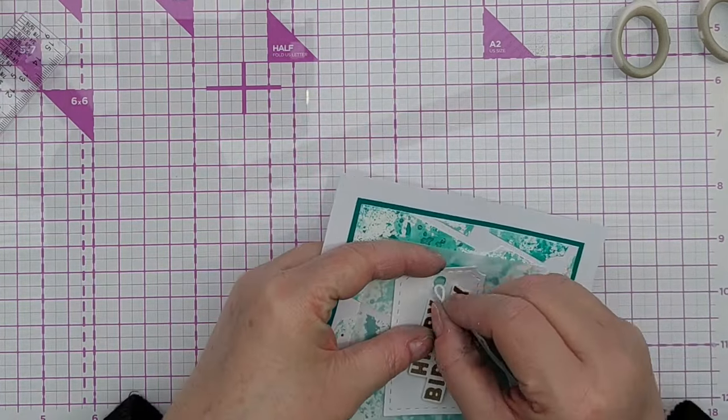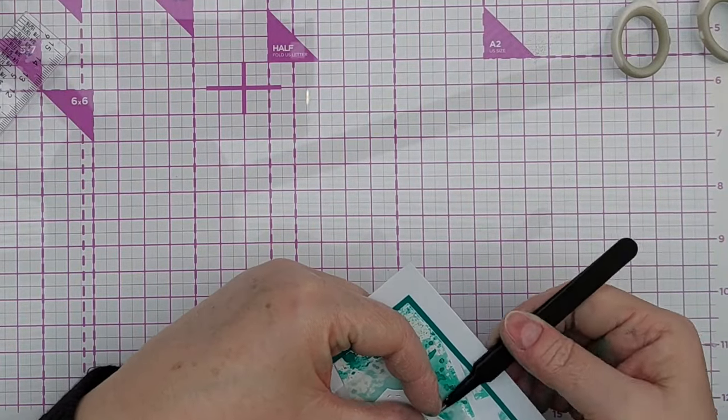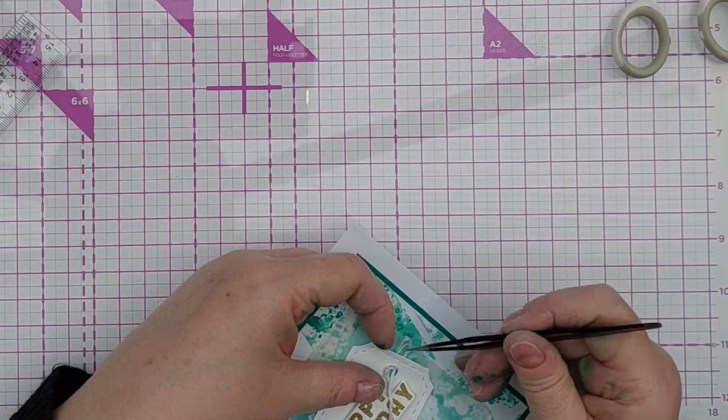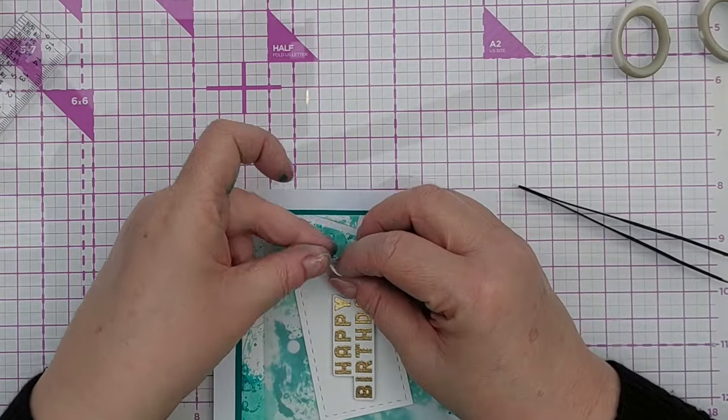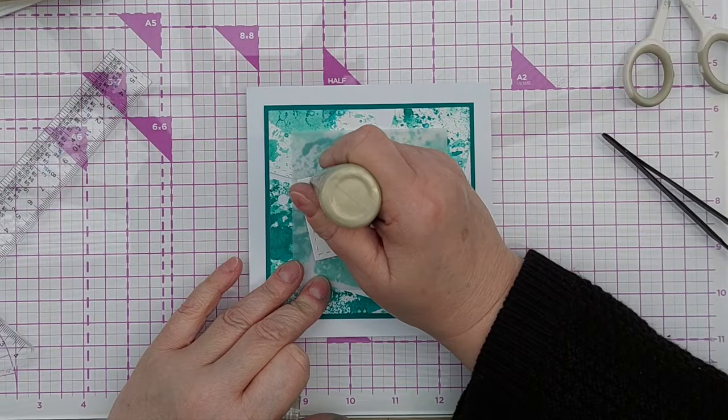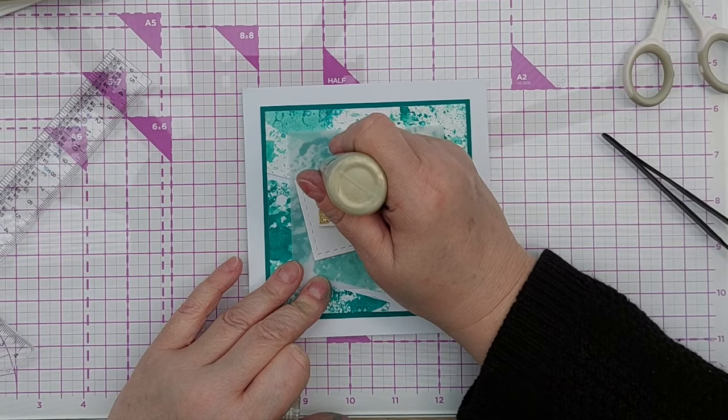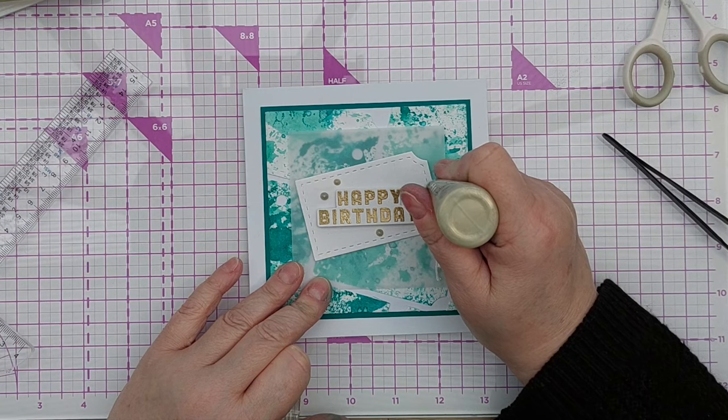And I should have done this next bit first, and that was to thread some embroidery thread through the hole in the tag. But I did just about manage to do it without making a mess using my tweezers. And as a finishing touch, I added Nouveau Drops in pale gold just around that happy birthday sentiment to draw the eye to the middle. And that's it.